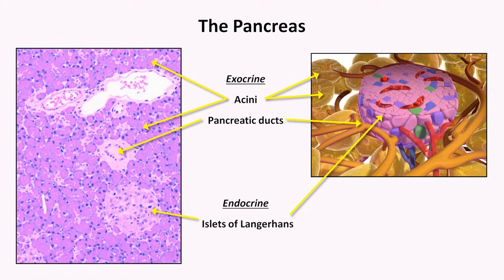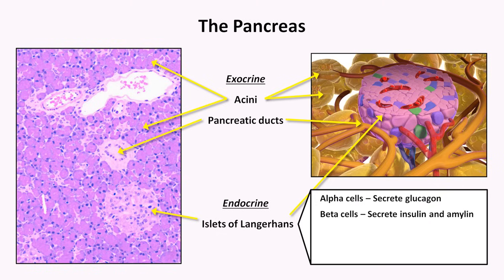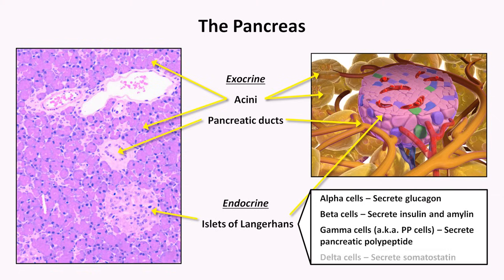The islets are composed of multiple cell types, each of which secretes a different one or two hormones. Alpha cells secrete glucagon. Beta cells, which are the most numerous, secrete both insulin and another hormone called amylin. Gamma cells, frequently referred to as PP cells, secrete pancreatic polypeptide, the function of which is unclear and won't be discussed further. Delta cells secrete somatostatin. A fifth, much rarer cell type has recently been discovered — epsilon cells — which appear to secrete a hormone called ghrelin.